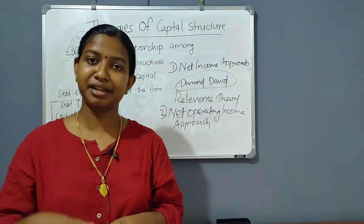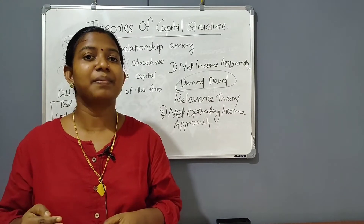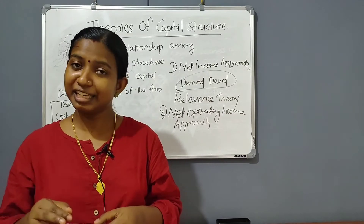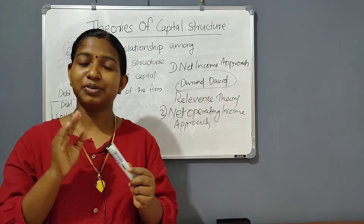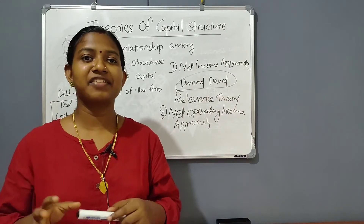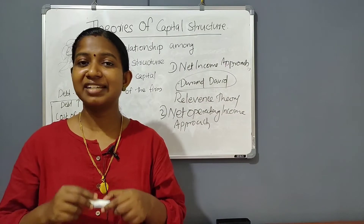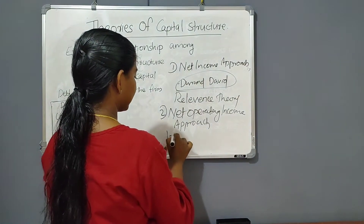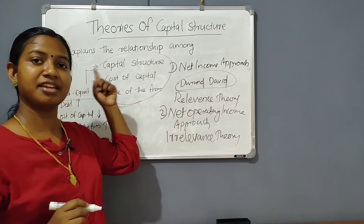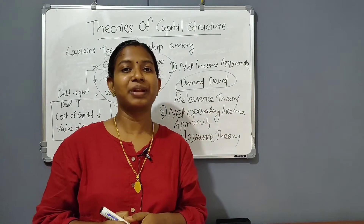Suppose in a business organization, we have to reduce the cost of capital — but according to this approach, you cannot reduce the cost of capital, and this does not affect the value of the firm. Whether the difference between equity and debt is 50-50, full equity, full debt, 60-40, or 30-70 — that proportion does not affect the firm's value. This is the Irrelevance Theory.